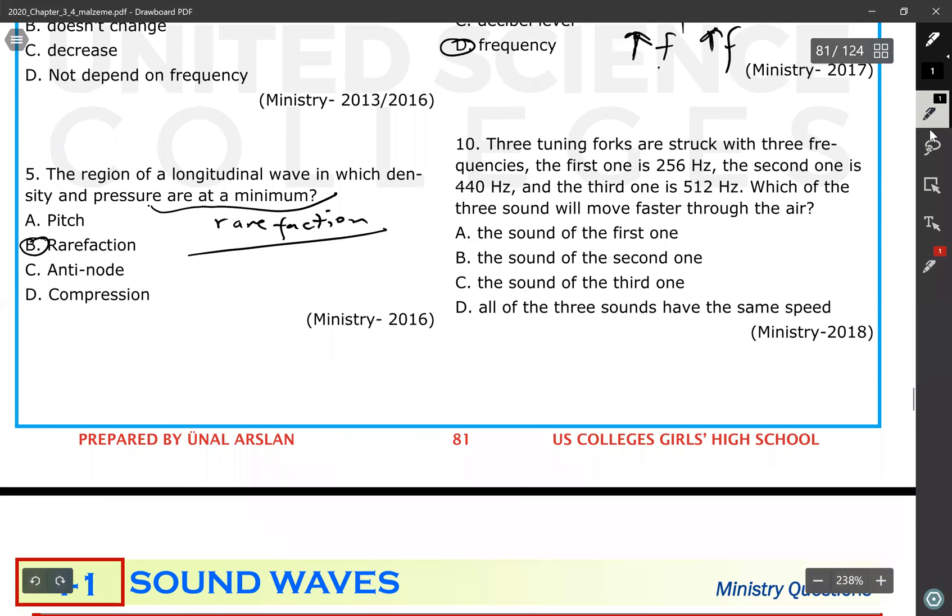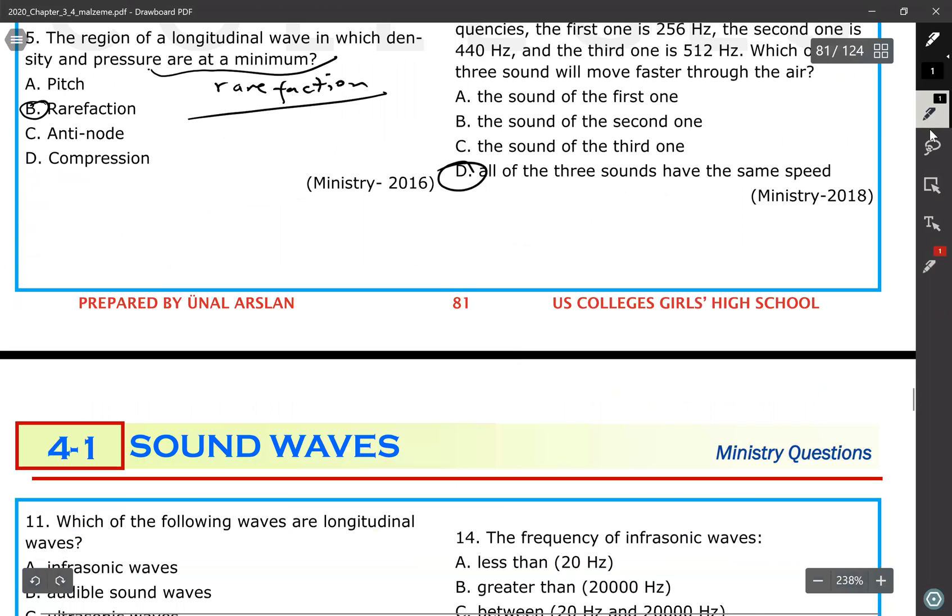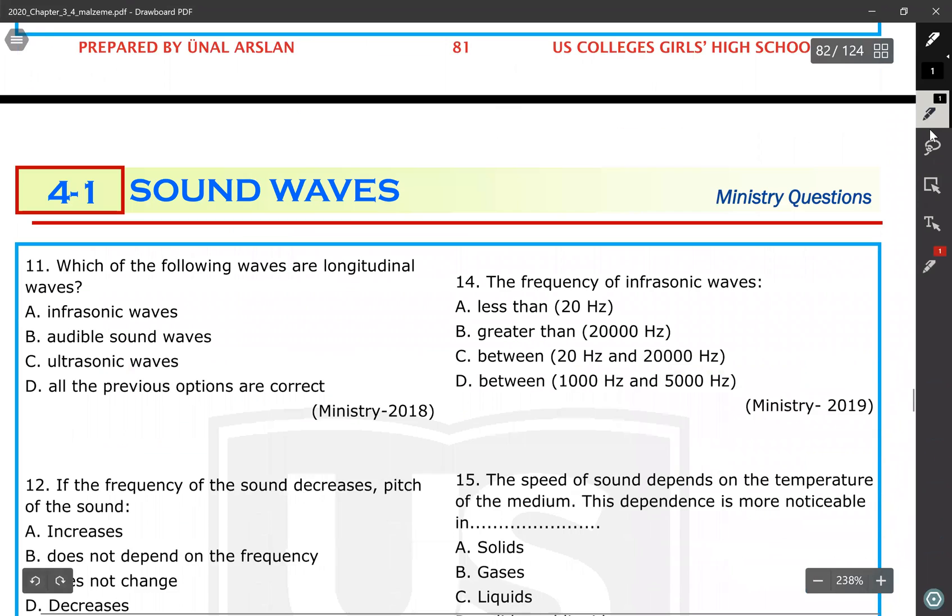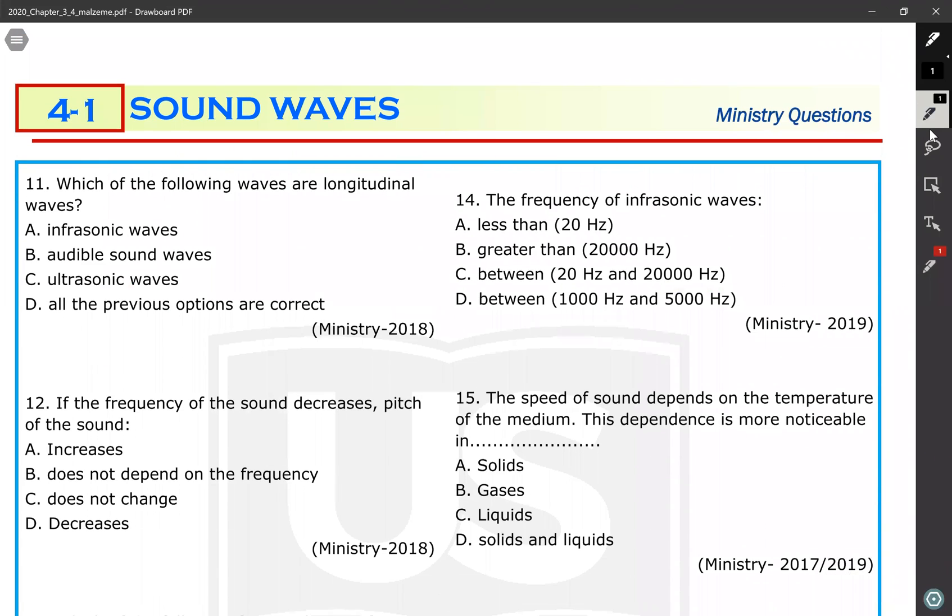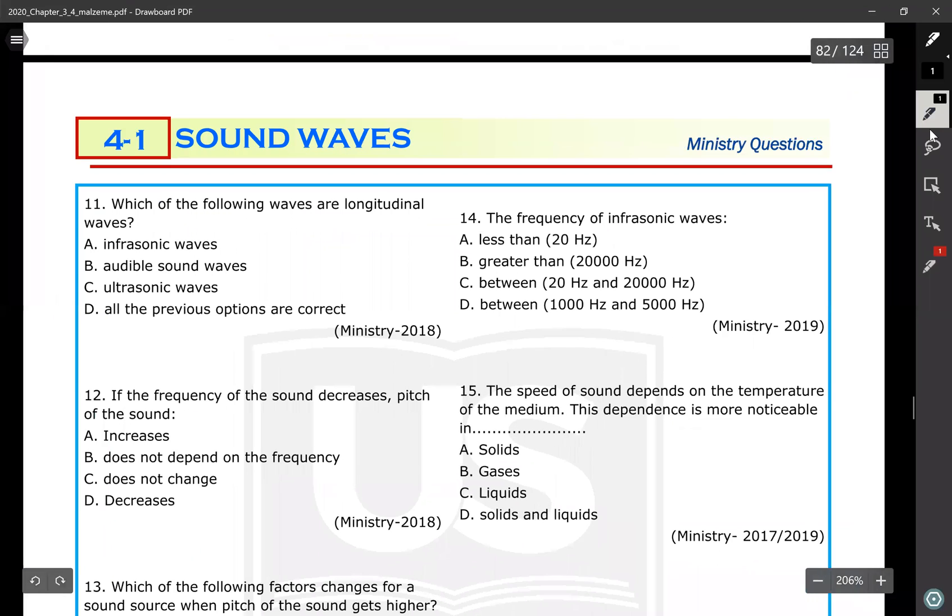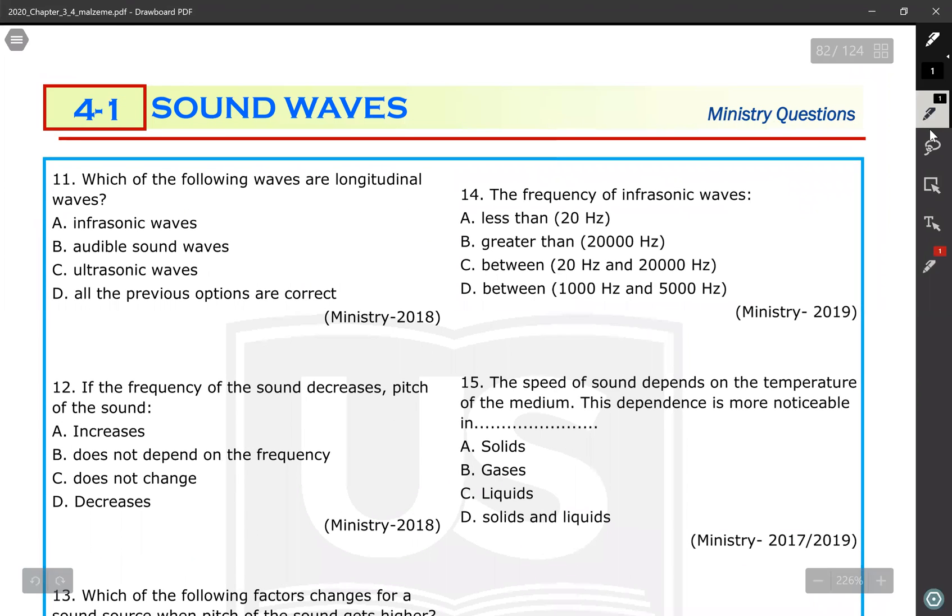Question number 10: three tuning forks are struck with three frequencies - one of them is 256 Hz, one is 440, third one is 512 Hz. Which of the three sounds will move faster? Because all are sound waves, all are mechanical waves, all are traveling in the same medium. So all must have the same speed. All mechanical waves moving in the same medium - if you don't change the medium property or the type of the medium, the speed of the mechanical wave in a medium does not change.